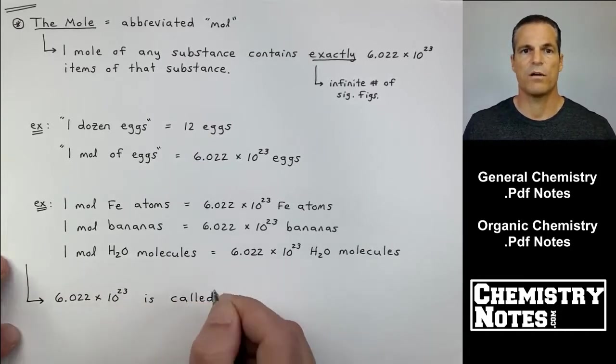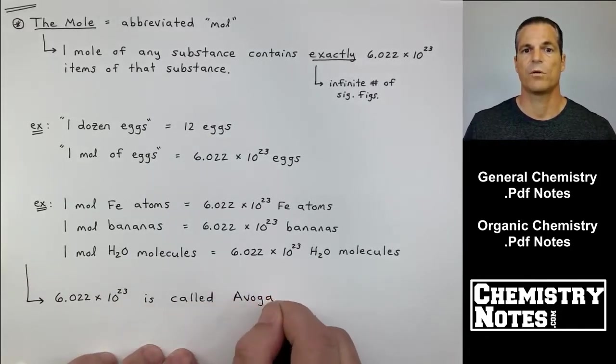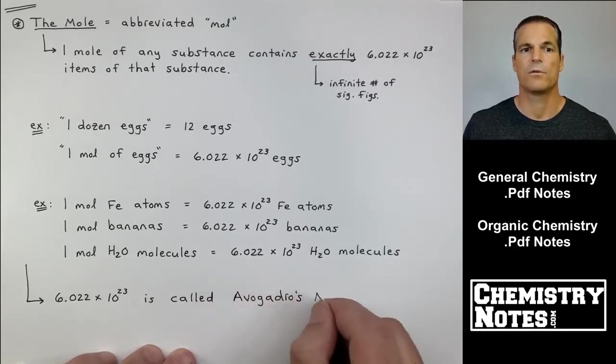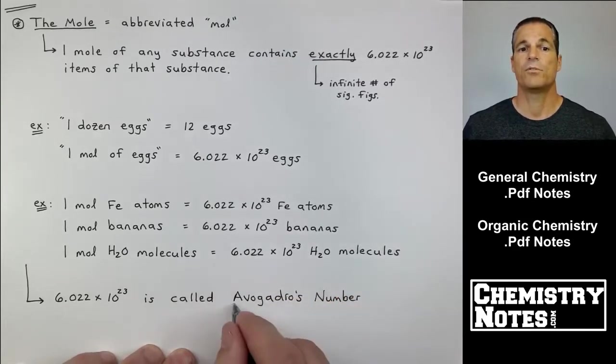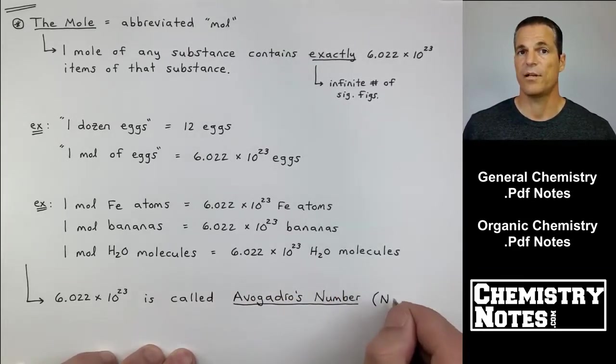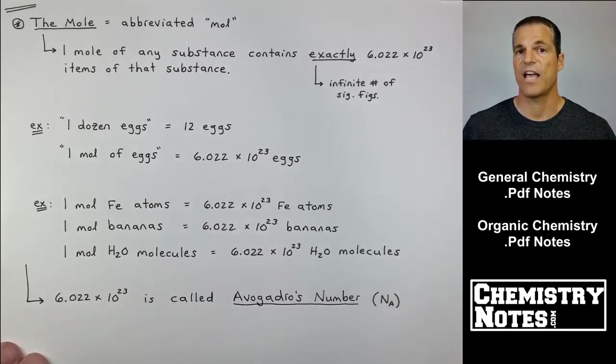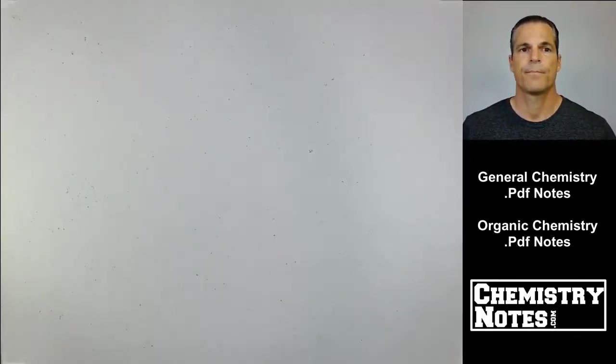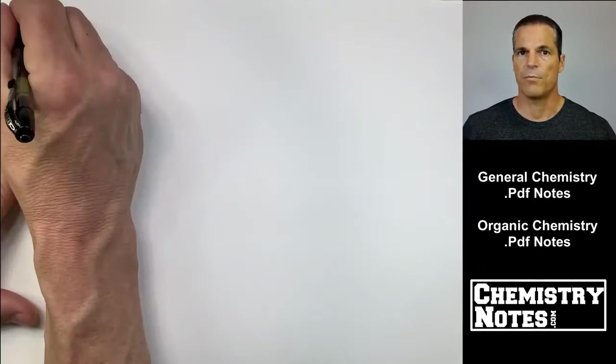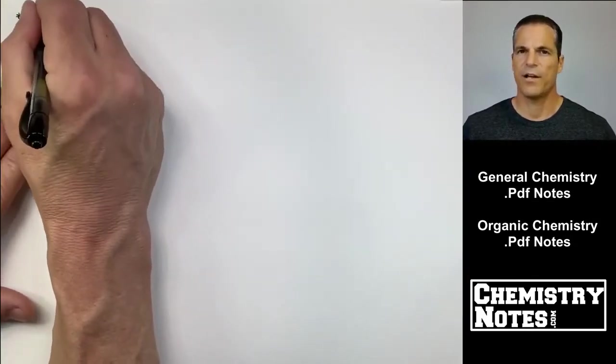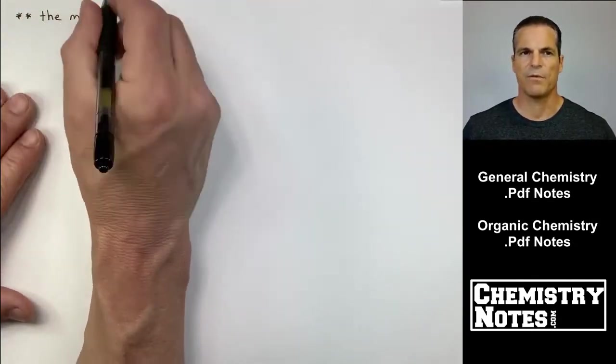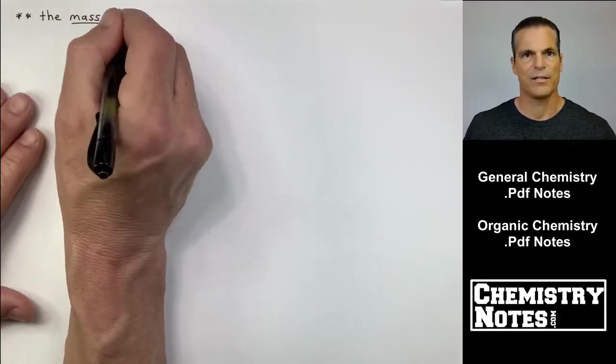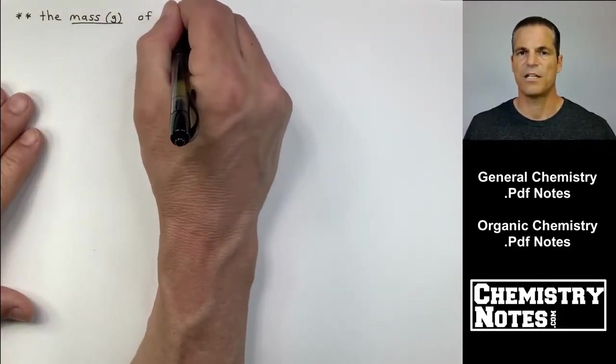So Avogadro's number, we often see in front of words like atoms or molecules. So 6.022 times 10 to the 23rd is called Avogadro's number. And it's an important number to remember. Most of you will find that you don't have too much difficulty remembering that number. For some reason, it just sticks in our brain.